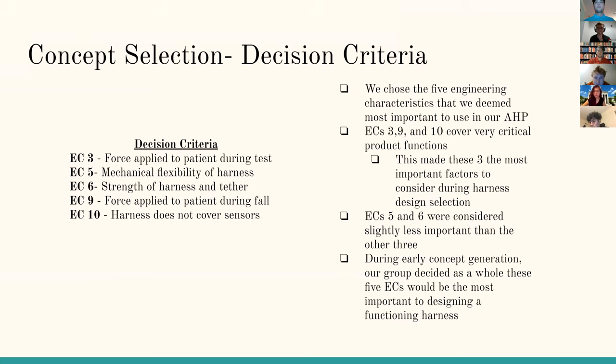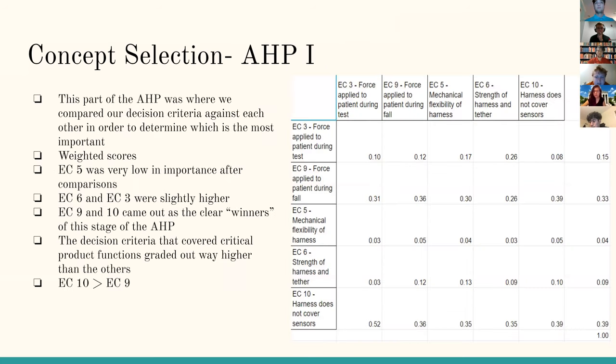And you can see in our AHP chart, engineering criteria 10 and 9, they have the highest weights by a wide margin over any of the other engineering characteristics.